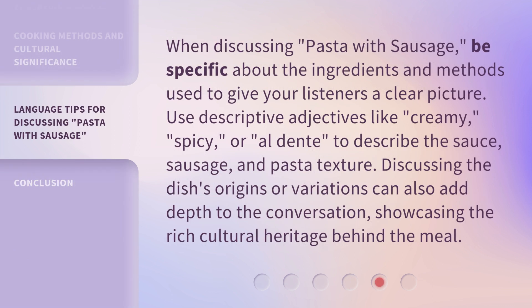When discussing pasta with sausage, be specific about the ingredients and methods used to give your listeners a clear picture. Use descriptive adjectives like creamy, spicy, or al dente to describe the sauce, sausage, and pasta texture. Discussing the dish's origins or variations can also add depth to the conversation, showcasing the rich cultural heritage behind the meal.